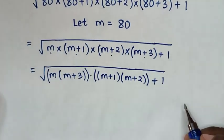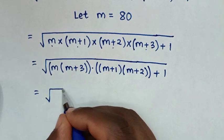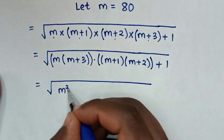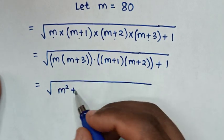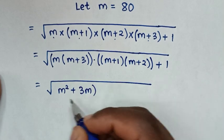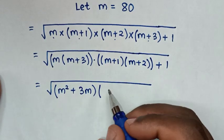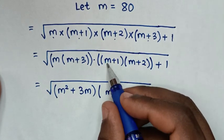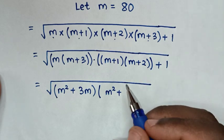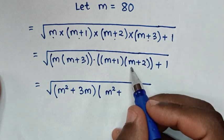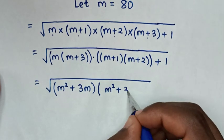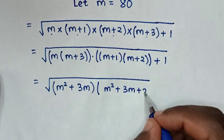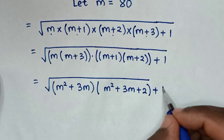In the next step, expanding: m(m+3) gives m²+3m, and (m+1)(m+2) gives m²+2m+2 — so it's the square root of (m²+3m)(m²+2m+2) plus 1. Wait — that is (m²+3m)(m²+3m+2) plus 1.